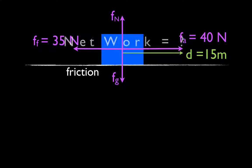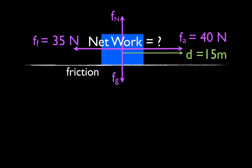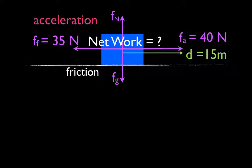We want to figure out the net work. You should notice that there are four forces: 40 newtons to the right by the applied force, 35 newtons to the left by the friction force, and we have a normal force and a gravitational force. The forces are unbalanced — 40 to the right, 35 to the left. Normal and gravitational forces are balanced, but in the x direction the forces are unbalanced. That means the net force is greater than zero, the net work is going to be greater than zero, and the object is experiencing acceleration.